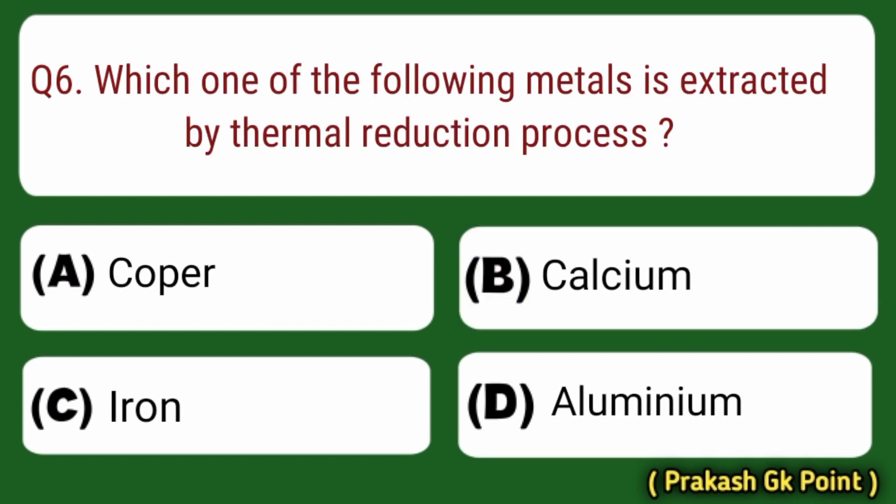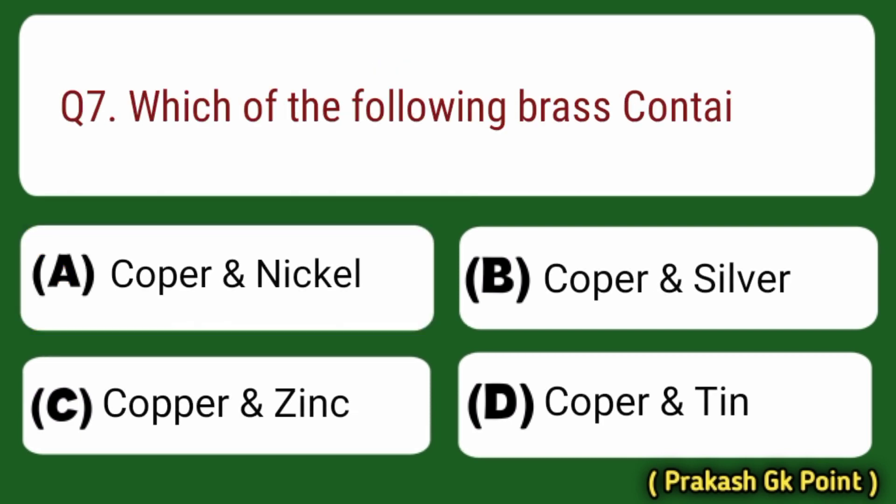Next question: which one of the following metals is extracted by thermal reduction process? Answer: Option A — Copper.